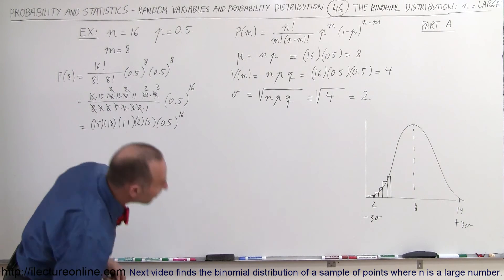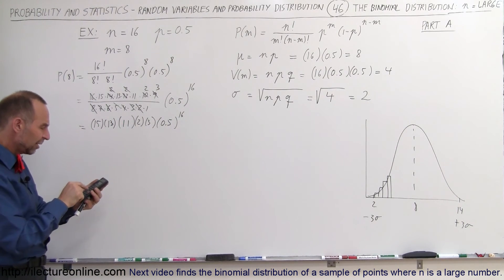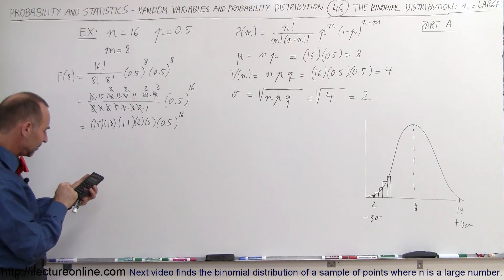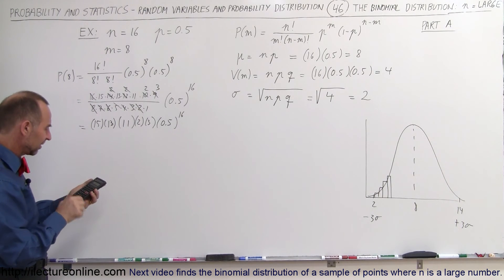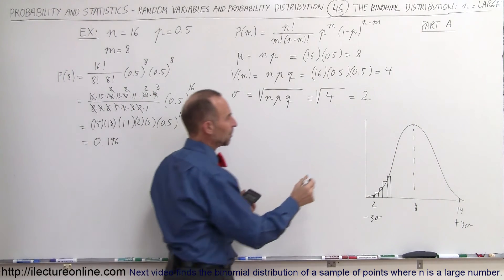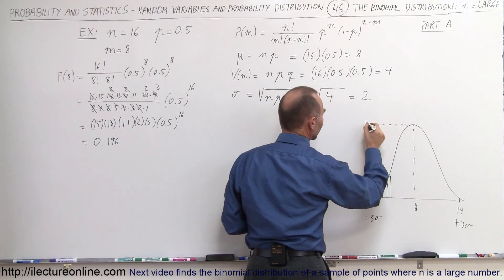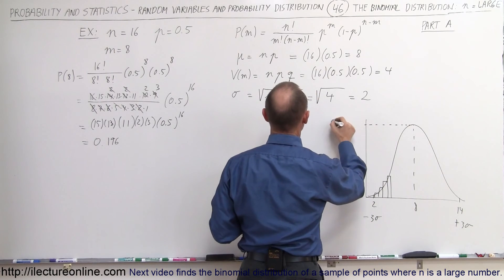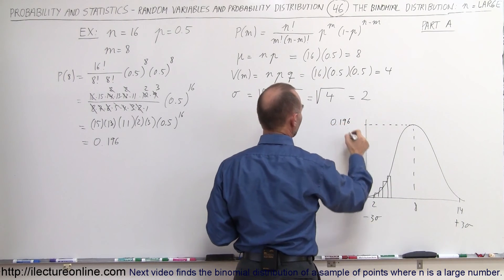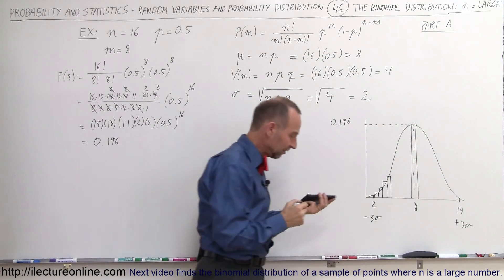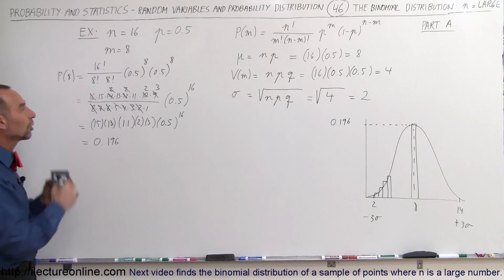Let's see what that equals. 0.5 raised to the 16th power, that's a pretty small number. Then we multiply times 15, times 13, times 11, and times 6, and we get a probability of 0.196. So the probability at the value that gives you the highest probability, in other words 8 successes, the probability is 0.196, and that would be for that middle value right there. So that's the value that we get by actually using the equation.